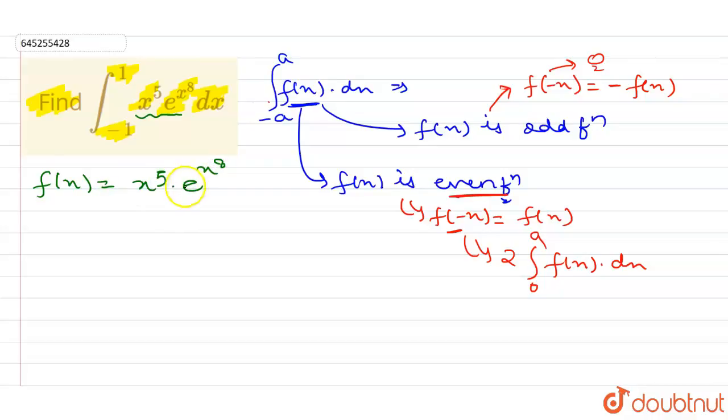For finding that our given f(x) is odd or even, I have to replace x by minus x. So I can write here f of minus x equals minus x power 5 into e power minus x power 8.